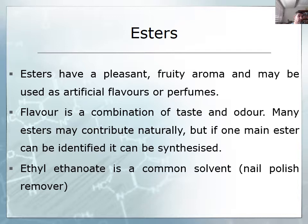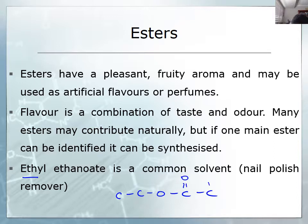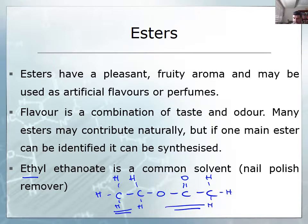Nail polish remover has been replaced by an ester called ethyl ethanoate. It's one that's easy to draw because there's two carbons on either side — one of those goes to the double-bonded oxygen, so that's where the acid will have come from, and then on the other side is where the ethanol, which was the starting alcohol, has come from. This is ethyl ethanoate, and it has replaced acetone as the primary ingredient in nail polish remover.